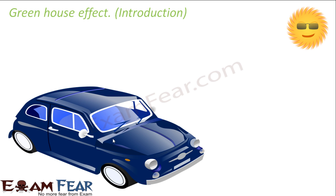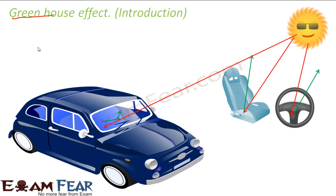I will tell you why this greenhouse word came and why it is called greenhouse. When your car is outside, the sunlight you get is visible light. But the rays which are radiated back by the seats or steering inside the car are infrared light. And this is the actual cause of the greenhouse effect.